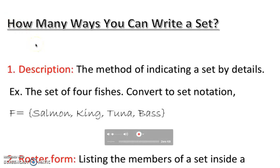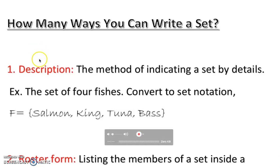Welcome back guys. Last video we talked about sets — the notation, the symbols, what makes a set, what is a finite set, infinite, well-defined. We can actually look into those again as you see when we try to write sets in different ways. The first method is description — the method of indicating a set by details. The first example is going to be the set of four fishes.